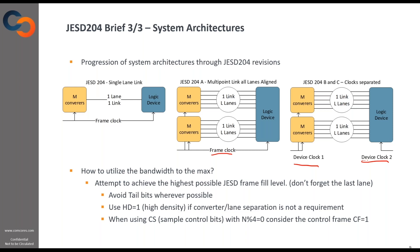Another aspect is how to maximize the bandwidth of your links. To achieve the highest possible bandwidth, you want to fill the JESD frame as much as possible to avoid tail bits in the framing. You probably want to use high density mode so that you pack as much data as possible. And when using control bits that don't fit well into nibble extensions, you'll probably want to put them at the end of the frame using CF, to avoid tail bits depending on your sample size.